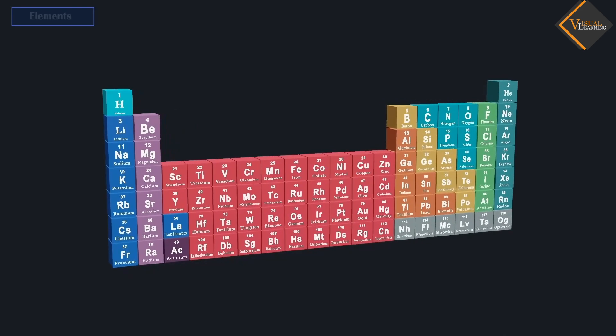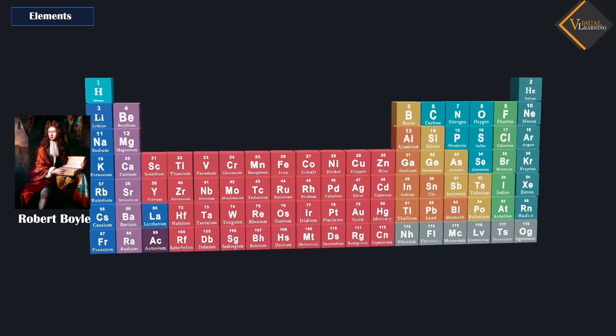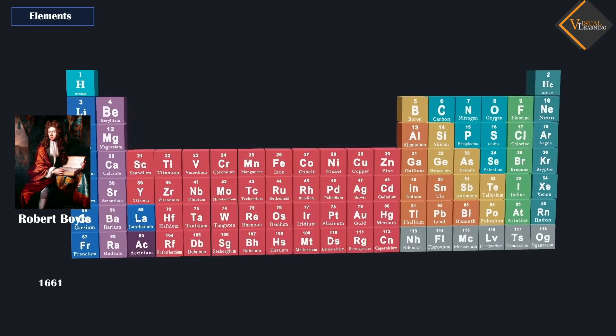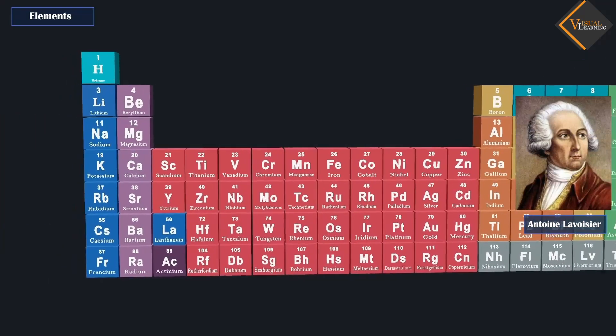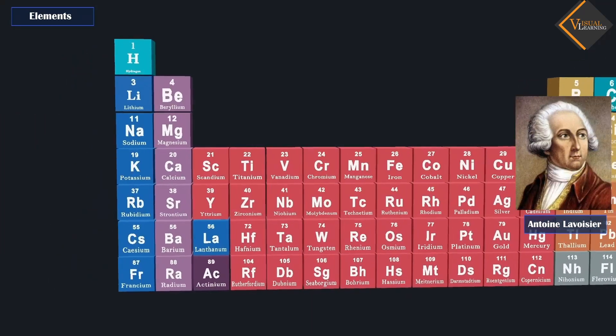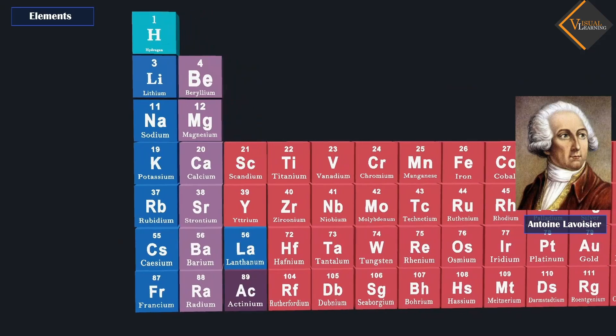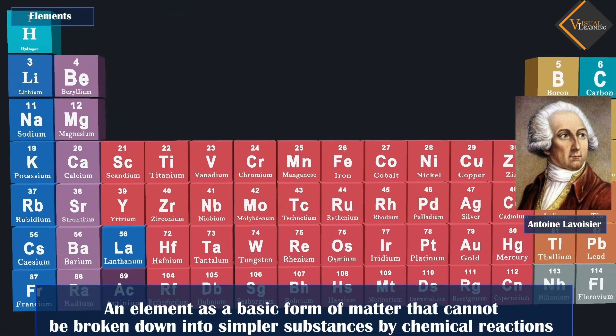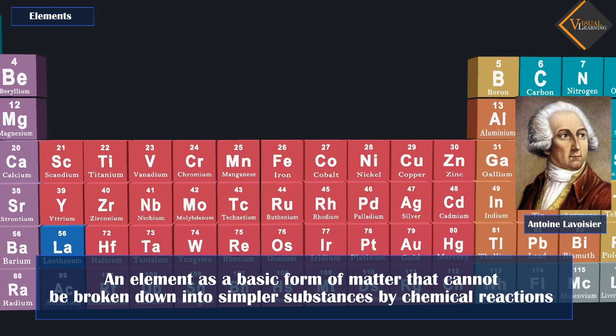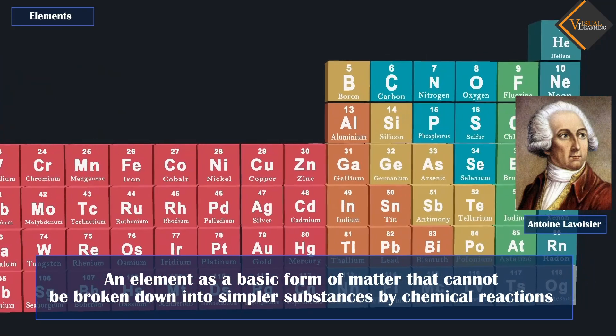Robert Boyle was the first scientist to use the term element in 1661. Antoine Laurent Lavoisier, a French chemist, was the first to establish an experimentally useful definition of an element. He defined an element as a basic form of matter that cannot be broken down into simpler substances by chemical reactions.